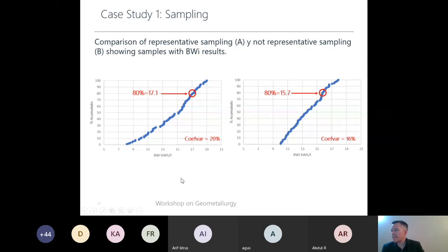We have same deposit, same number of samples, number of testing of bond work index. This is the bond work index on the X axis, and this is the accumulated on the Y axis. Look at the variability. Variability is different, because on the left we have representative sample, and on the right we have not representative sample, same model, same material, everything.